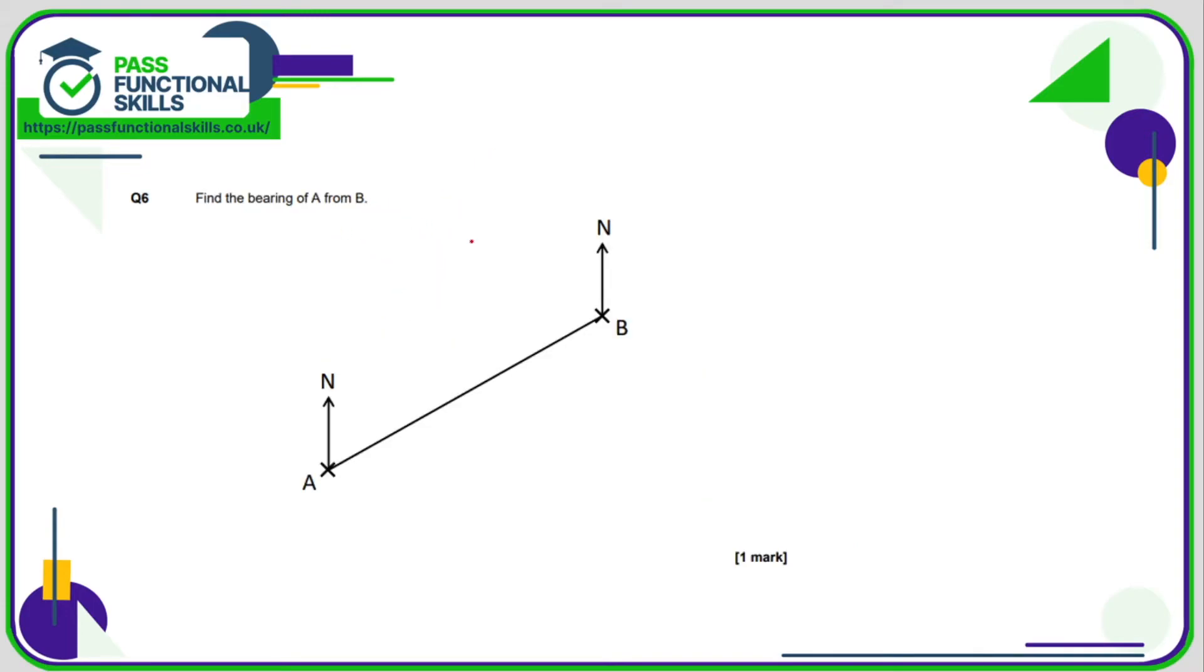Here we want the bearing of A from B. So if we're at B, what is the bearing of A? We need to measure this angle here. Using a protractor, we could measure this angle here and then subtract that from 360. Another way we could do it is to measure this angle and add 180 degrees to it. This angle here, we know that if it was straight down, that would be 180. And if it was three quarters of the way around, it would be 270. So this angle has to be somewhere between 180 and 270 degrees.